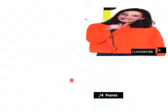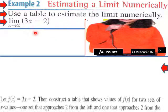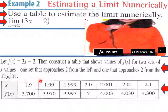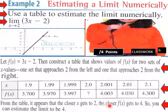Let's try an example — estimating a limit numerically. Find the limit of 3x minus 2 as x approaches 2. Let f of x equal 3x minus 2, then construct a table showing values of f of x approaching 2 from the left and from the right. From the table, the closer x gets to 2, the closer f of x gets to 4. You can estimate the limit to be 4.